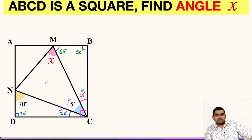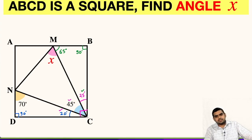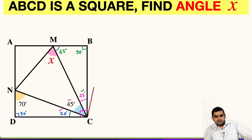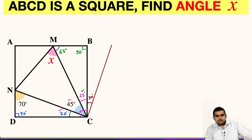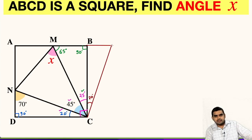Now we are very close to finding angle X. In order to proceed, we have to do one construction — draw a line segment from point C such that it makes a 20-degree angle, stopping at 20 degrees. This is our construction. Next, we will extend line AB so that it intersects this already drawn line segment, and let us name this intersection point as point P.